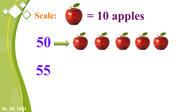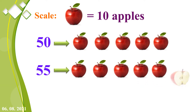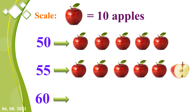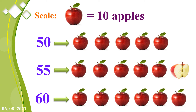Next, 55 means we want to draw 5 full apples and 1 half apple. Next, 60 means we want to draw 6 apples, because 60 divided by 10 we get 6. So 1, 2, 3, 4, 5, and 6.